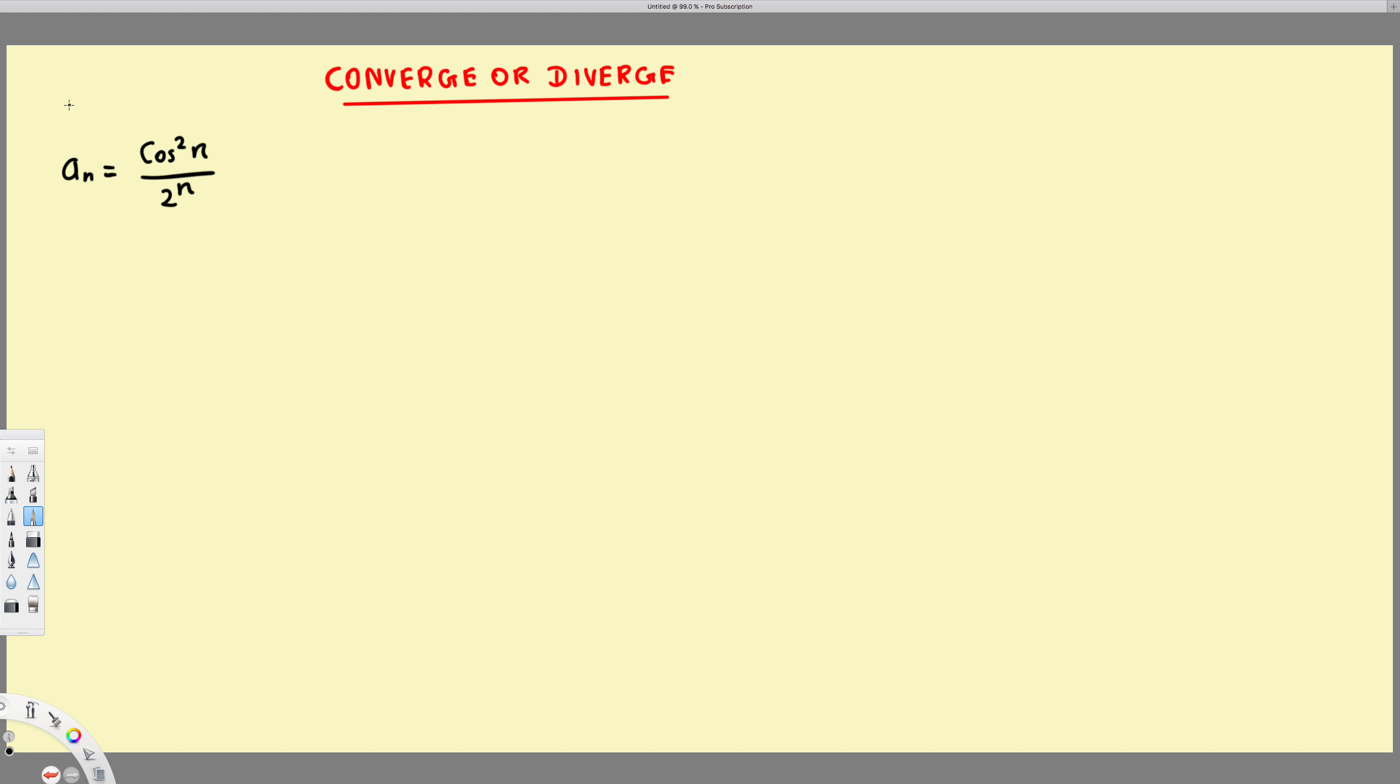What's going on guys, we have a sequence given by this notation and asking to find whether it converges or diverges. This is cos²n, and so here first we are going to write this one as a limit n approaches infinity cos²n over 2^n.